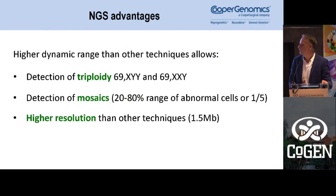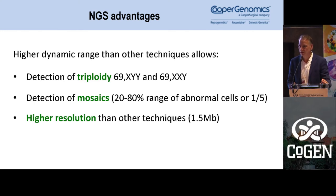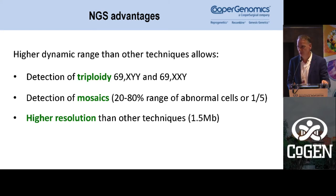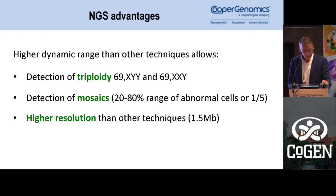The advantages are that we can detect some triploidies — 69,XXY or 69,XXY. We can detect mosaics between 20 and 80 percent when biopsying five cells; if you biopsy ten cells you can detect 10 to 90 percent, although we don't recommend biopsying ten cells. Data from Richard Scott's group shows that biopsying ten or more cells has a detrimental effect on implantation. The resolution is quite high, between 1.5 and 3 megabases depending on the biopsy.